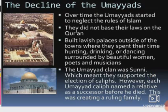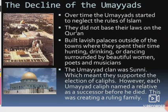Over time, the Umayyads started to neglect the rules of Islam. They did not base their laws on the Quran. They built lavish palaces outside of towns where they spent their time hunting, drinking, or dancing, surrounded by beautiful women, poets, and musicians. The Umayyad clan was Sunni, which meant they supported the election of caliphs; however, each Umayyad caliph named a relative as a successor before he died, effectively creating a ruling family. All these features led to the decline of the Umayyads.